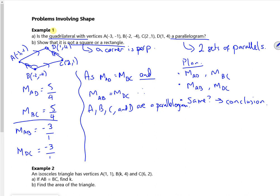So let's have a look at the gradient between A and B and the gradient between B and C. So the gradient from A to B is 5 over 4. The gradient from B to C is -3. That equals -15 over 4.